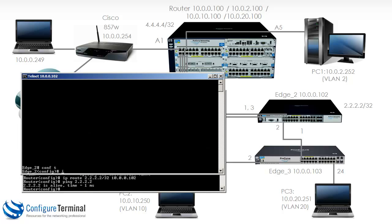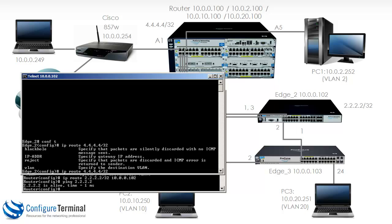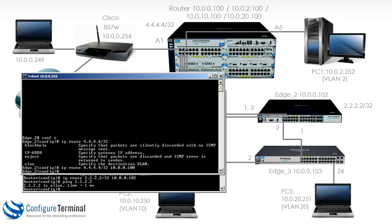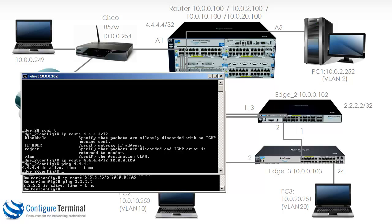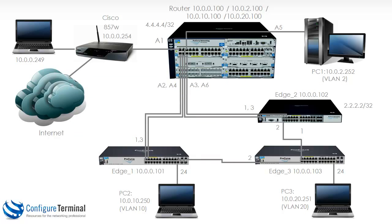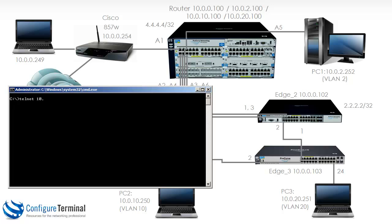On edge 2, type 'IP route 4.4.4.4/32' with the next hop IP address of the router, 10.0.0.100, to get to that network. Notice edge 2 can now ping 4.4.4.4 — it succeeds. We created two loopbacks to mimic separate networks in the topology: 2.2.2.2 as a separate logical network on edge 2, and 4.4.4.4 as a separate logical network on the router. We created the loopbacks and then created the static routes to enable connectivity. However, the Cisco router won't be able to ping those addresses because it doesn't know about those networks. Checking 'show IP route' on the Cisco router, it has a static default route and static routes to 10.0.10.0, 10.0.10.0, 10.0.20.0, and 10.0.20.0, but it doesn't have a route to 2.2.2.2.